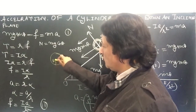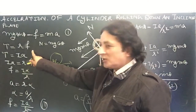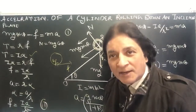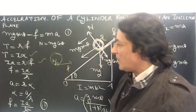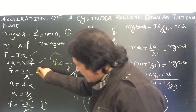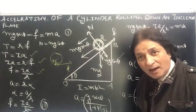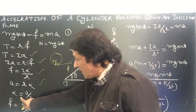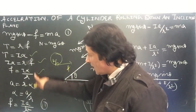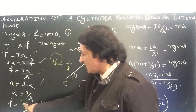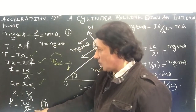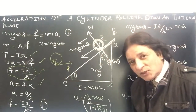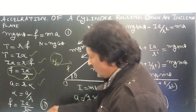Torque is equal to r times f, and torque is also equal to I alpha. So I alpha equals r times f, which gives f equals I alpha upon r. Since acceleration a equals r times alpha, we get alpha equals a upon r. Substituting, the force of friction f equals I times a upon r squared.